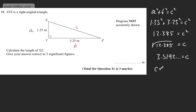So we can say that C is equal to 3.52 metres, and that now is given to three significant figures. So question number 11, three marks in total.